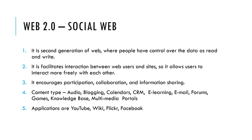Web 2.0, the social web, is the second generation of web where people have control over the data with read and write capability. It facilitates interaction between web users and sites, allowing users to interact more freely, increasing participation, collaboration, and information sharing. Content types include audio, blogging, calendars, CRM, e-learning, emails, forums, games, and multimedia portals. Main applications include YouTube, wikis, Flickr, and Facebook.